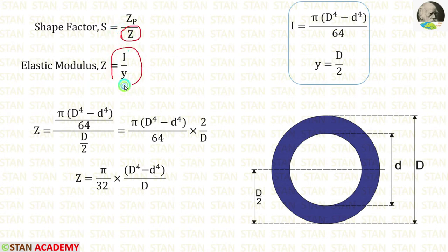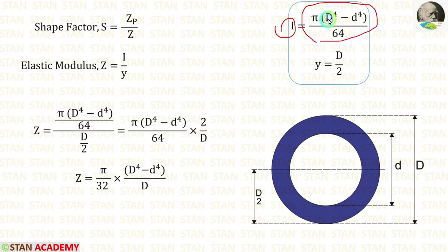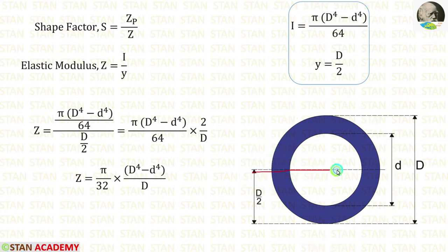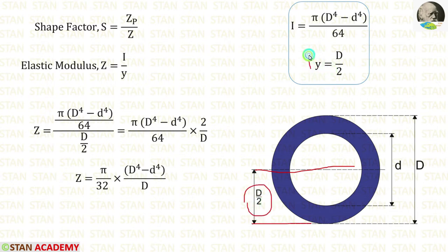The formula is I by y. The formula for moment of inertia in a hollow circle is pi into caps D power 4 minus small d power 4, by 64. This circle section is symmetrical, so the neutral axis lies in the center. From the neutral axis to the fiber, the distance is D by 2. So y is equal to D by 2.